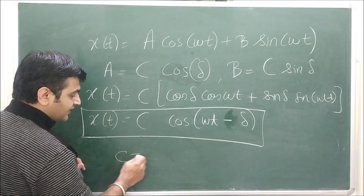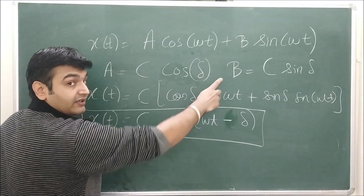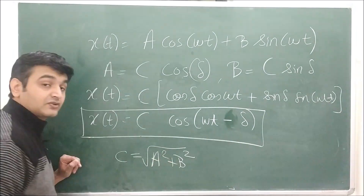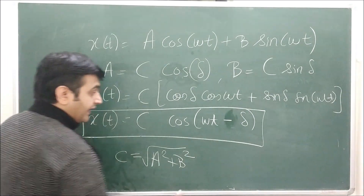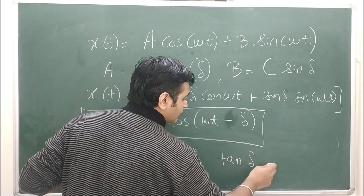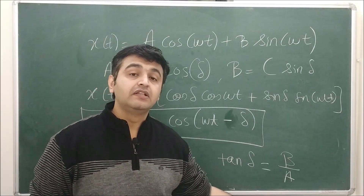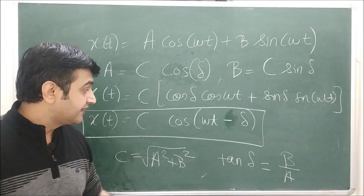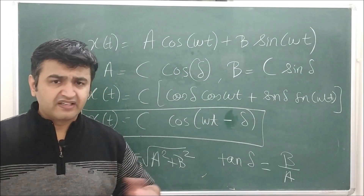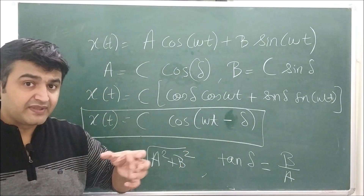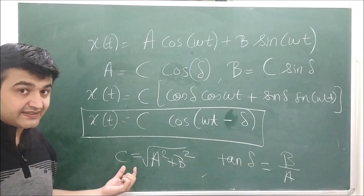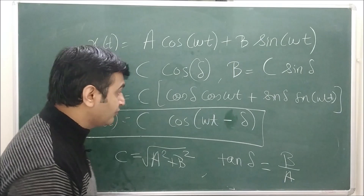From the substitutions A = C·cos(δ) and B = C·sin(δ), squaring and adding gives C² = A² + B², so C = √(A² + B²). Dividing gives tan(δ) = B/A, so δ = arctan(B/A). The phase shift angle δ determines whether the curve shifts left or right. You must be careful about which quadrant δ lies in depending on the signs of A and B.